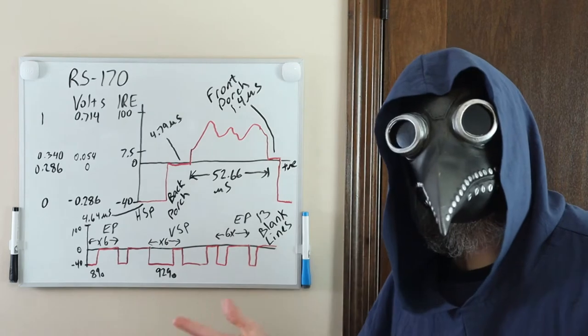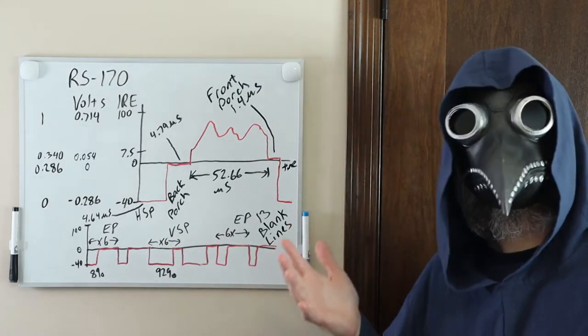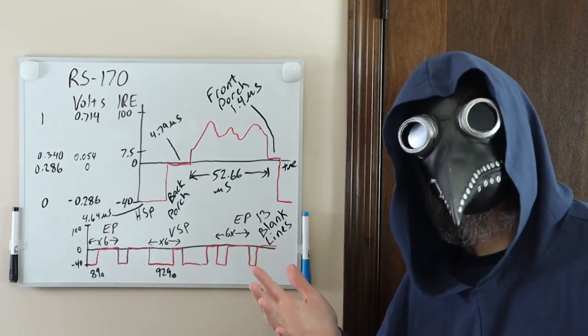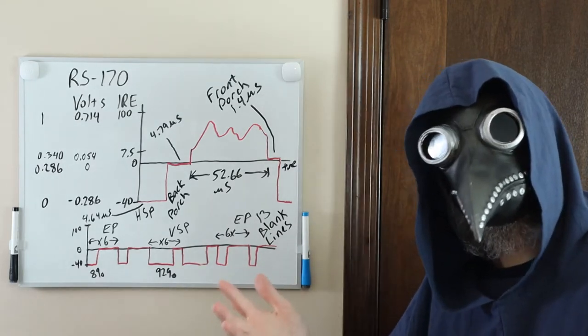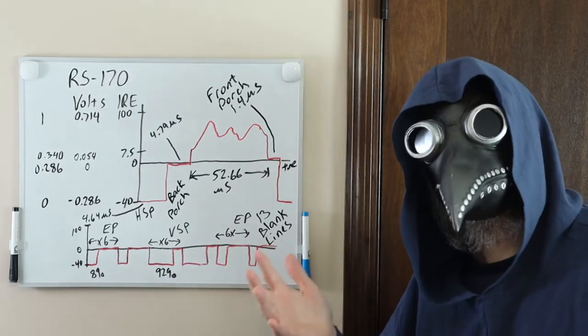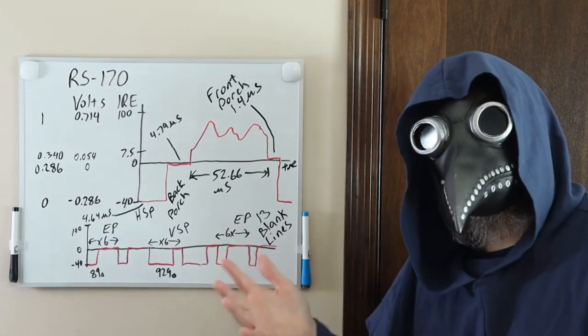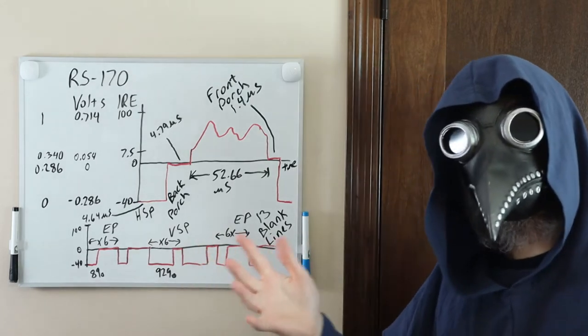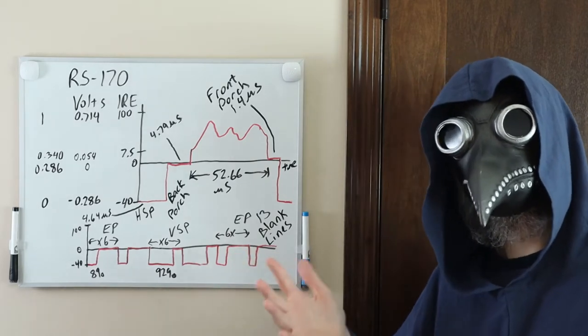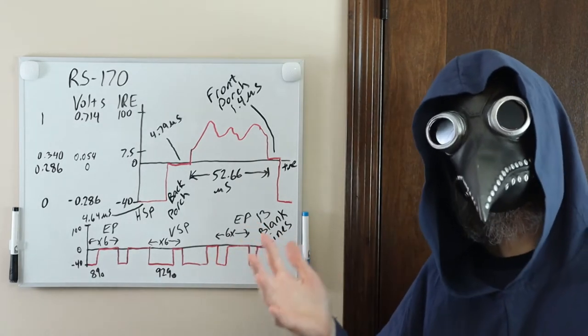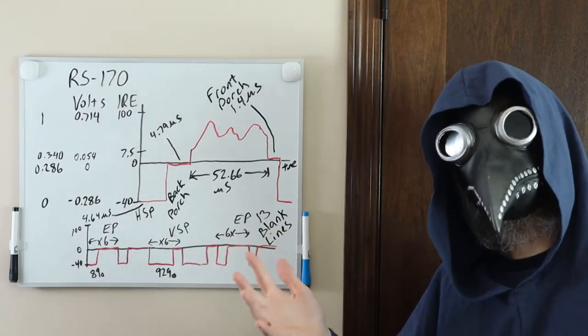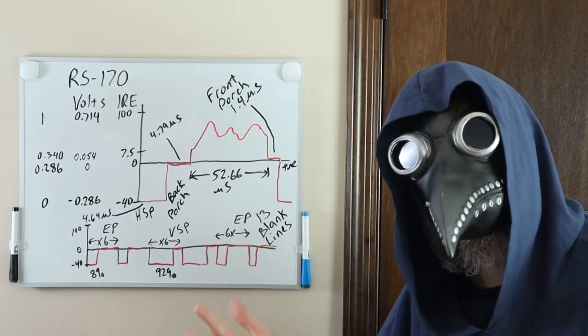There are two fields that are drawn. One for the odd lines and one for the even lines. During the first field, there is half a line drawn at the end of all the visible lines, and during the second field, there is half a blank line before the 13 blank lines in the vertical blanking interval. By the way, there are 240 full lines drawn for each field for a total of 480 visible lines.